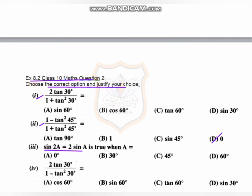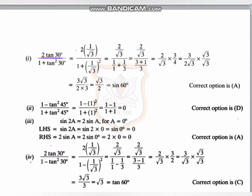In the same way, sin2a equals 2sina — we have to determine for which value this is true. For the fourth MCQ we substitute the value of tan30 and solve. In the first MCQ we have 2tan30; the value of tan30 is 1 over root3, so we put 2 times 1 over root3, and in the denominator 1 plus (1 over root3) whole squared.